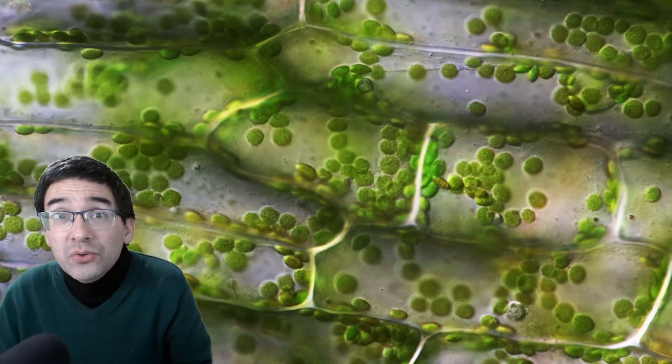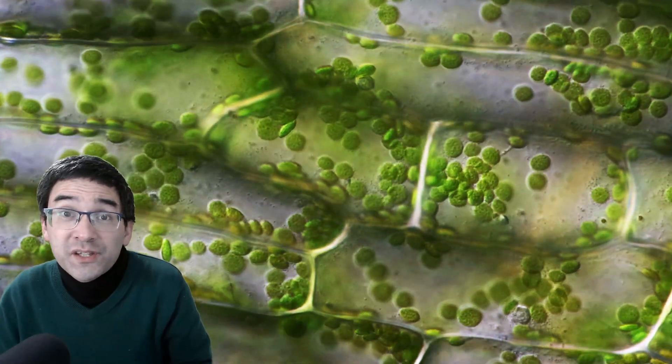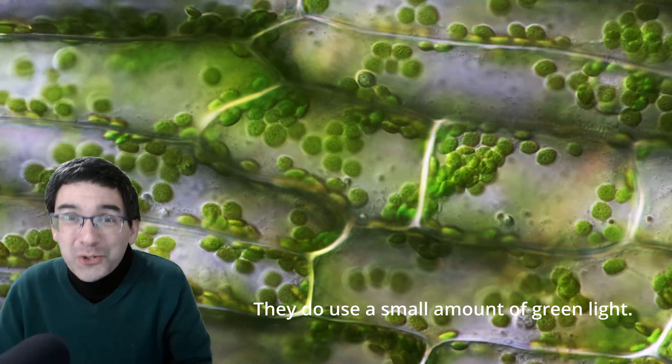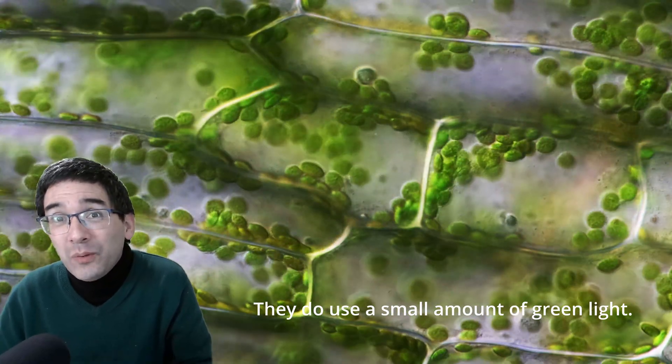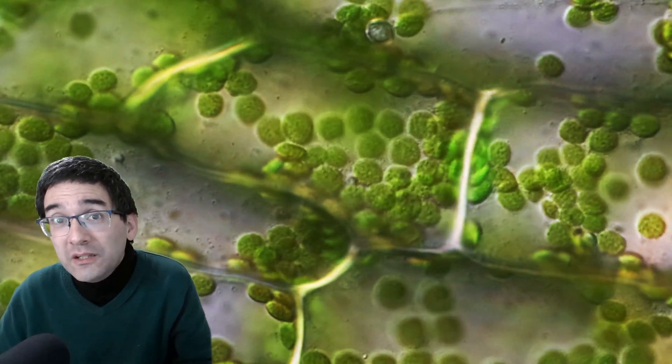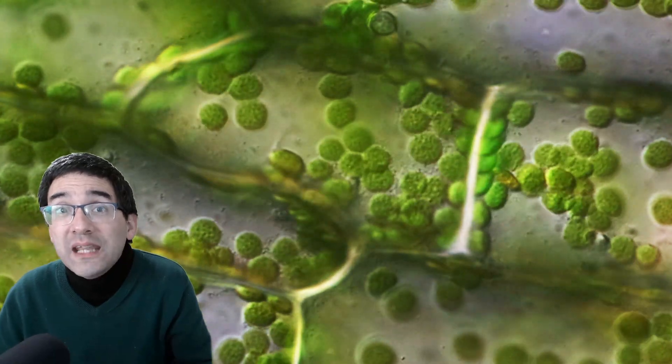Plants use the red and blue parts of the solar spectrum for photosynthesis, but not the green one. Scientists have found a possible solution: by rejecting the green color, it makes photosynthesis more stable.